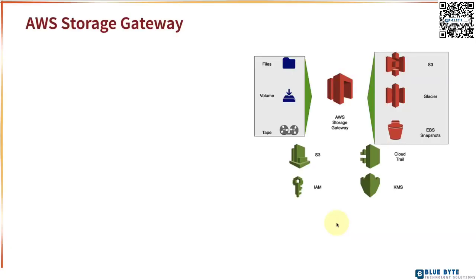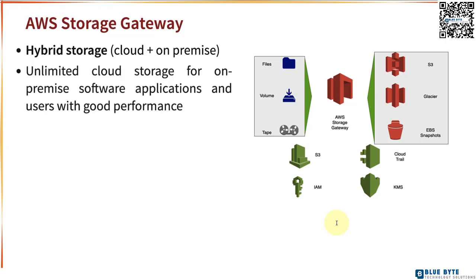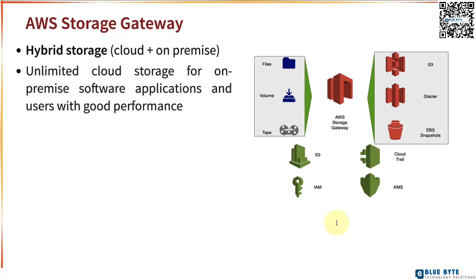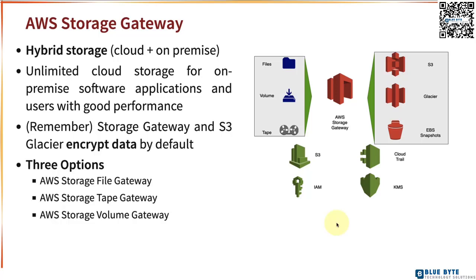In the last few steps we looked at block storage, file storage, and object storage. With all the storage services we talked about, all the data is stored in the cloud in AWS. What if you want to go for hybrid storage — storing some data on the cloud and some data on-premise? That's when you'd go for AWS Storage Gateway, which provides unlimited cloud storage for on-premise software applications and users, with really good performance.